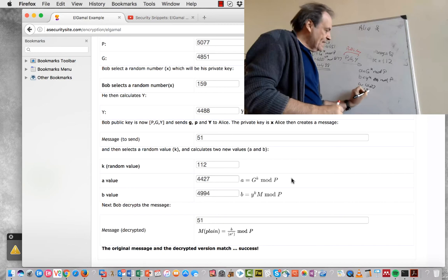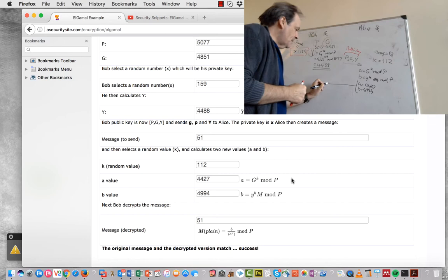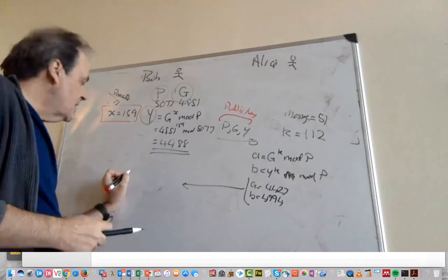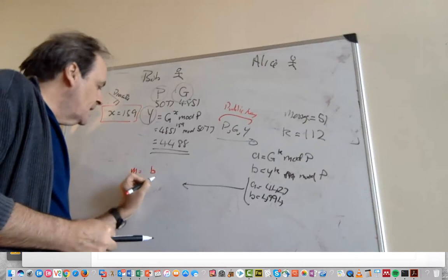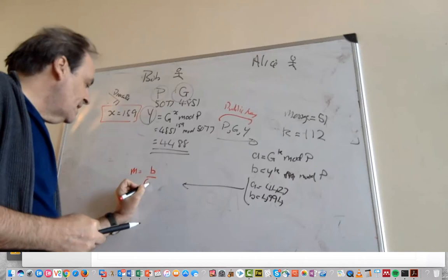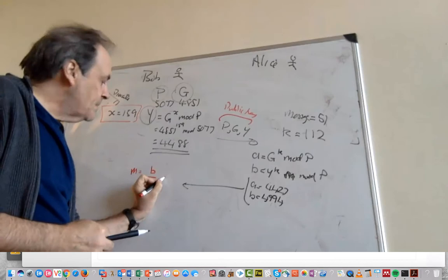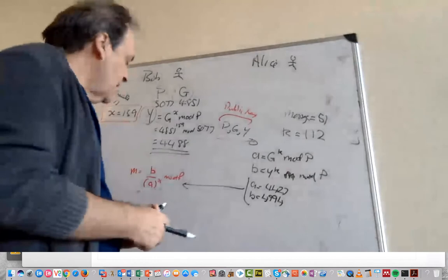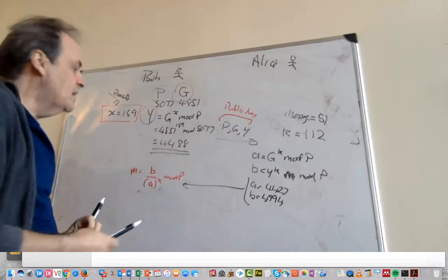This value then gets sent back to Bob, and Bob now calculates the message is equal to our value of B divided by, and we have A to the power of X, and mod P. So if we do the maths behind that, hopefully you'll find out that the message is equal to 51.